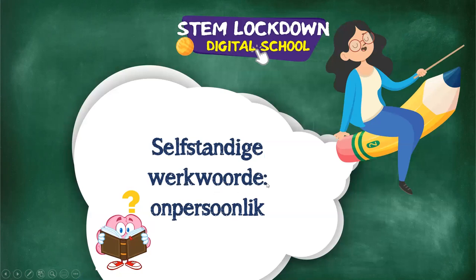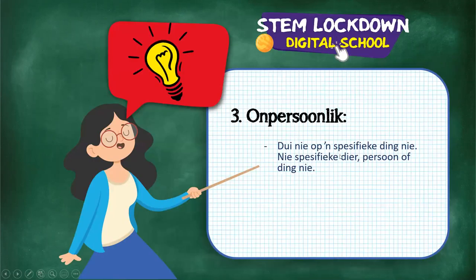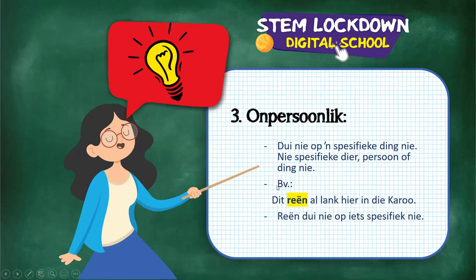Number three: selfstandige werkwoorde onpersoonlik. Think of ice here — if you've ever watched Frozen — because this is very impersonal. It tells us something that doesn't refer to something specific, so it's not a specific dier or persoon or thing. You're saying 'dit', not a name. 'Dit reën altyd in die Karoo' — look at that 'dit' — 'reen' doesn't really refer to something specifically. That's onpersoonlik.